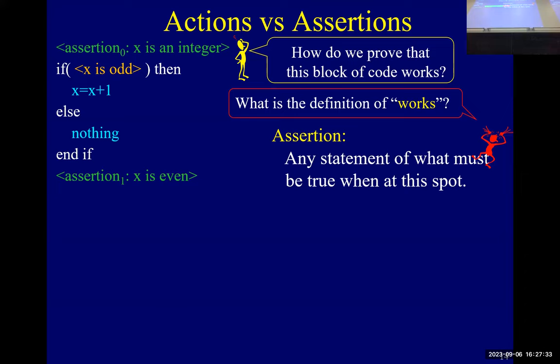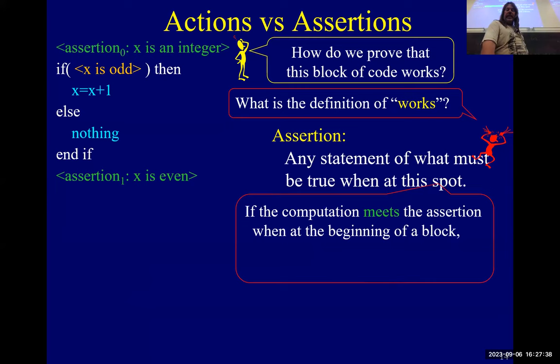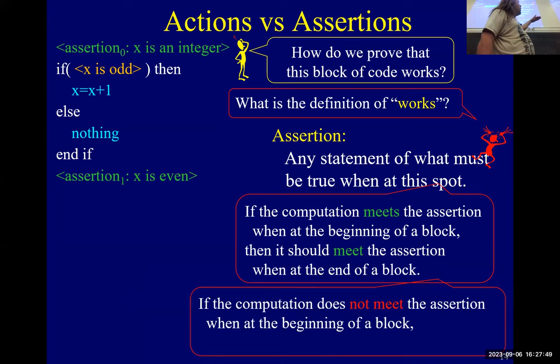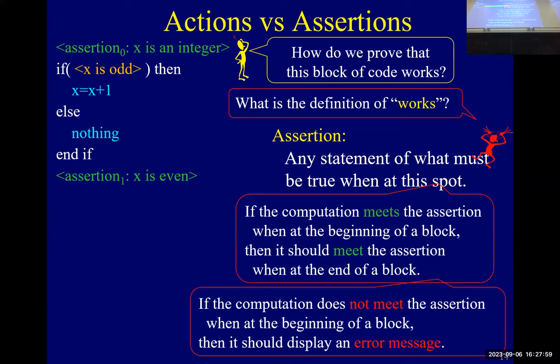If at the beginning of the block the assertion is true and you execute the code, then at the end the assertion needs to be true. If at the beginning it's not true, you should give an error message. Usually when running a program, a little error message comes up because there was some assertion that got checked and it wasn't true when it was supposed to be.